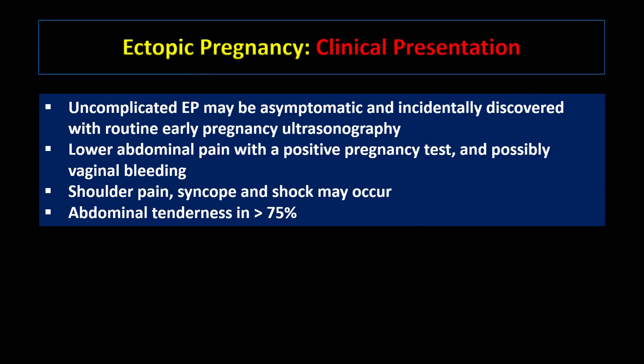A complicated ectopic pregnancy may be asymptomatic and incidentally discovered during routine early pregnancy ultrasound examination. Patients may present with vaginal bleeding and lower abdominal pain. The severity of pelvic pain does not necessarily correlate with the size of an ectopic pregnancy, and pain may even decrease or disappear following tubal rupture. Hypovolemic shock and shoulder pain secondary to diaphragmatic irritation are indirect signs of a ruptured ectopic pregnancy. Abdominal tenderness is seen in more than 75% of cases.